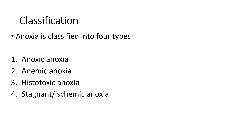Anoxia is classified into four types: the first one is anoxic anoxia, the second is anemic anoxia, the third is histotoxic anoxia, and the fourth is stagnant or ischemic anoxia. We will see all four in detail.